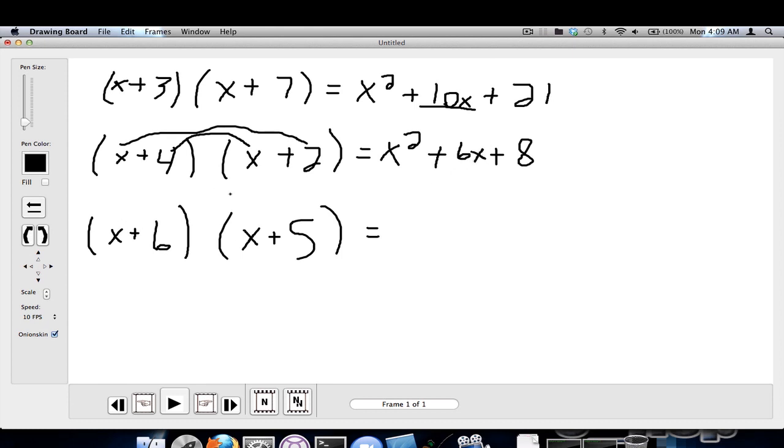And the last one: X times X is X squared. Let's get the last parameter: six times five is thirty. We use the rainbow method once again to get the middle parameter. X times five is five X, six times X is six X. Six X plus five X equals eleven X.